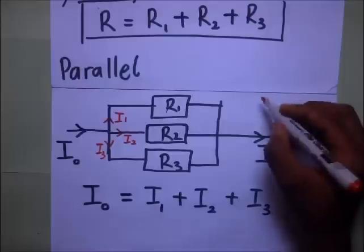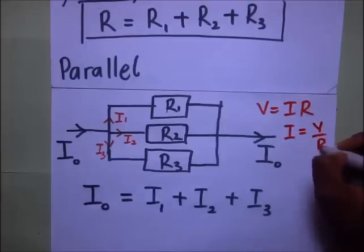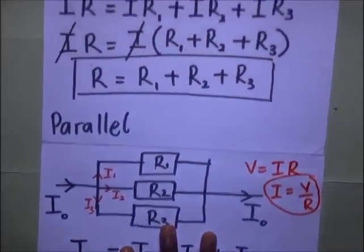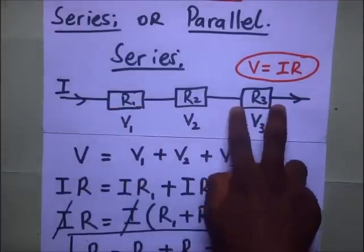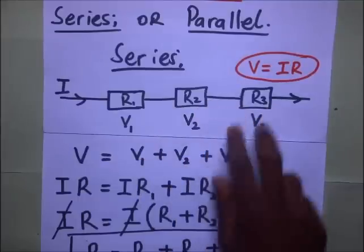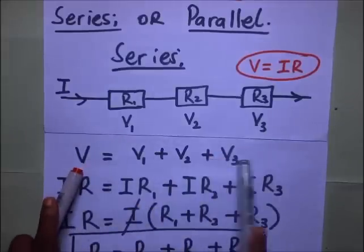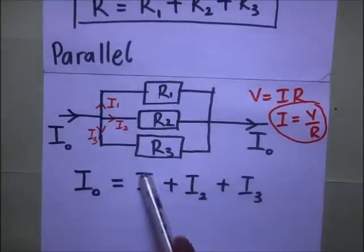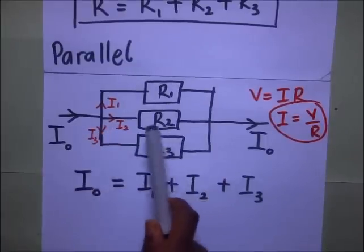From our formula V equals IR, making I the subject gives I equals V over R. Now there is a fundamental difference for resistors in parallel: whereas resistors in series have different potential drops across each resistor and we add them to get total voltage, resistors in parallel all have the same potential difference across them. The potential difference across R1, R2, and R3 in parallel is the same.